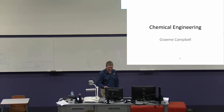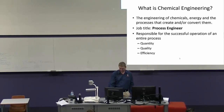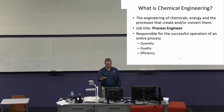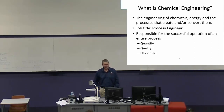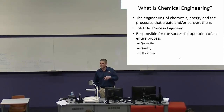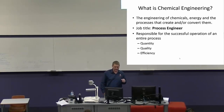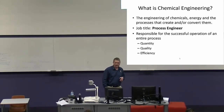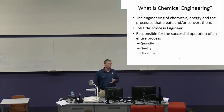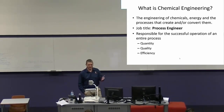Thank you. So, chemical engineering — a definition I took from Wikipedia — is the engineering of chemicals, energies, and the processes that create or convert them. Chemical engineering is not necessarily the most helpful title, because when you get a job as a chemical engineer, typically the job you'll be doing is called a process engineer. You're responsible for the successful operation of an entire process, including the quantity and quality of goods produced and the efficiency involved in keeping your company profitable.